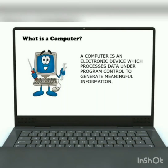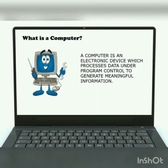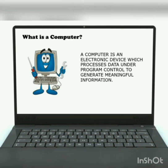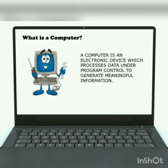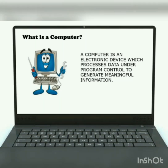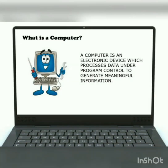Now let's know what is a computer. A computer is an electronic device which processes data under program control to generate meaningful information. When a user feeds any raw data into a computer through any input devices, the brain of the computer, that is the Central Processing Unit, processes that raw data and gives meaningful information through any output devices. For example, when a user feeds 1 plus 1, the computer brain, that is CPU, accepts it and gives the result as 2 through any output devices.